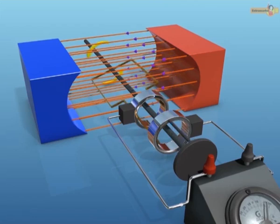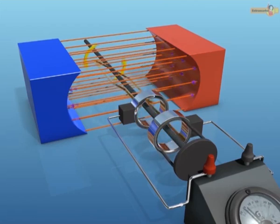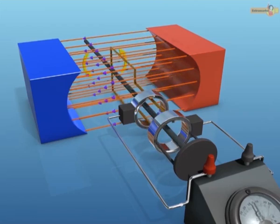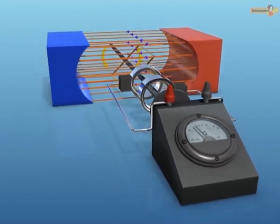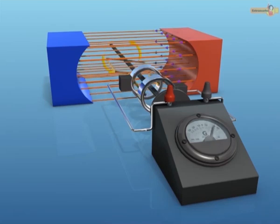The current is detected by the galvanometer connected in the external circuit. Due to change in the relative position of the armature coil, the direction of the current flowing in each arm of the armature coil keeps on changing and hence the current so obtained is alternating current.